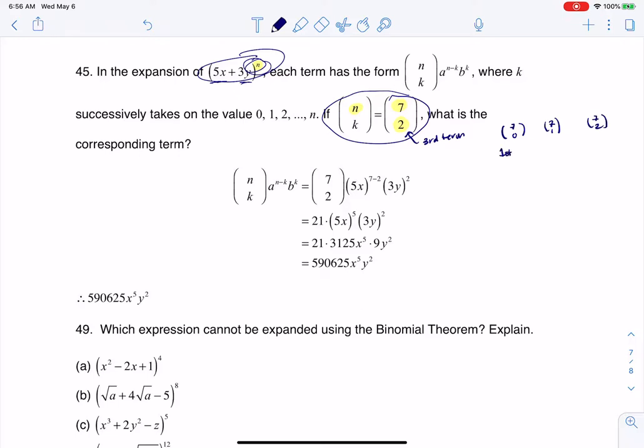So this is the first term, this is the second term, and this is the third term. We're actually getting the third term in this binomial expansion. It follows this format, so what I mean is I'm going to put a 7 here, a 2 here, a 7 here, a 2 here, a 2 here. My a is 5x, and my b is 3y.